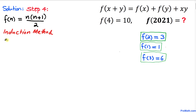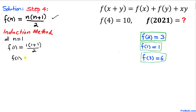First, let's try n = 1. Filling in the formula: f(1) = 1·(1 + 1) / 2 = 1·2 / 2 = 1. This matches our known value, so our statement is true for n = 1.